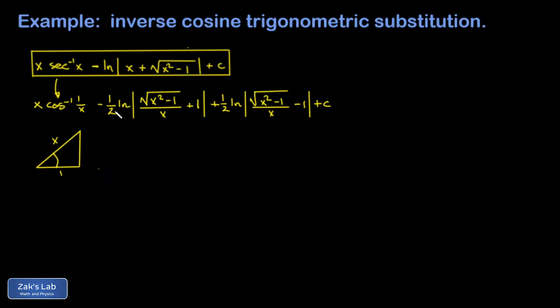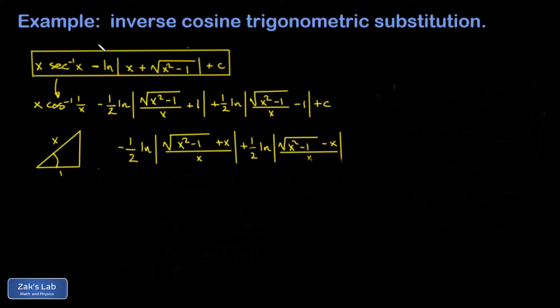What about all this log stuff? I'm going to start by getting common denominators inside the arguments of the log function. So instead of writing one, I'm going to write x over x, we'll combine that into a single numerator. Same thing for the other one. Okay, since we're going for a minus sign in front of a log, I'm going to factor a negative one out of this whole thing. And we'll pull the one half out while we're at it.